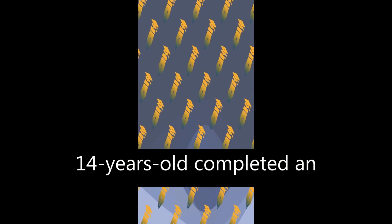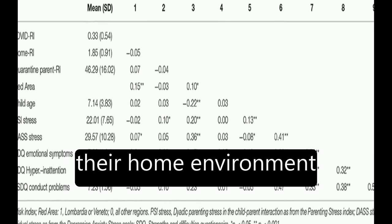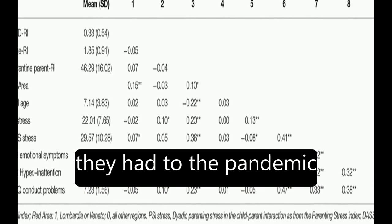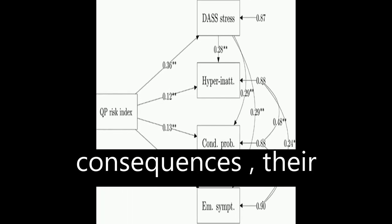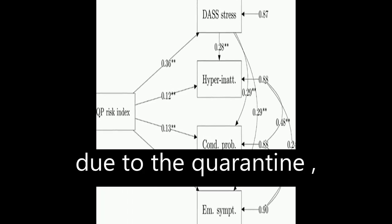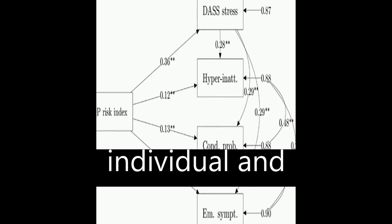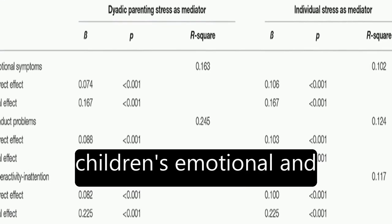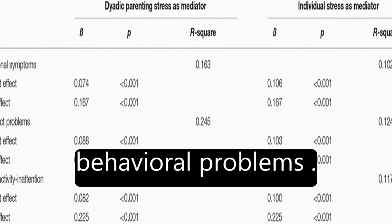Parents of children aged between 2 and 14 years old completed an online survey reporting their home environment conditions, any relation they had to the pandemic consequences, their difficulties experienced due to the quarantine, their perception of individual and parent-child dyadic stress, and their children's emotional and behavioral problems.